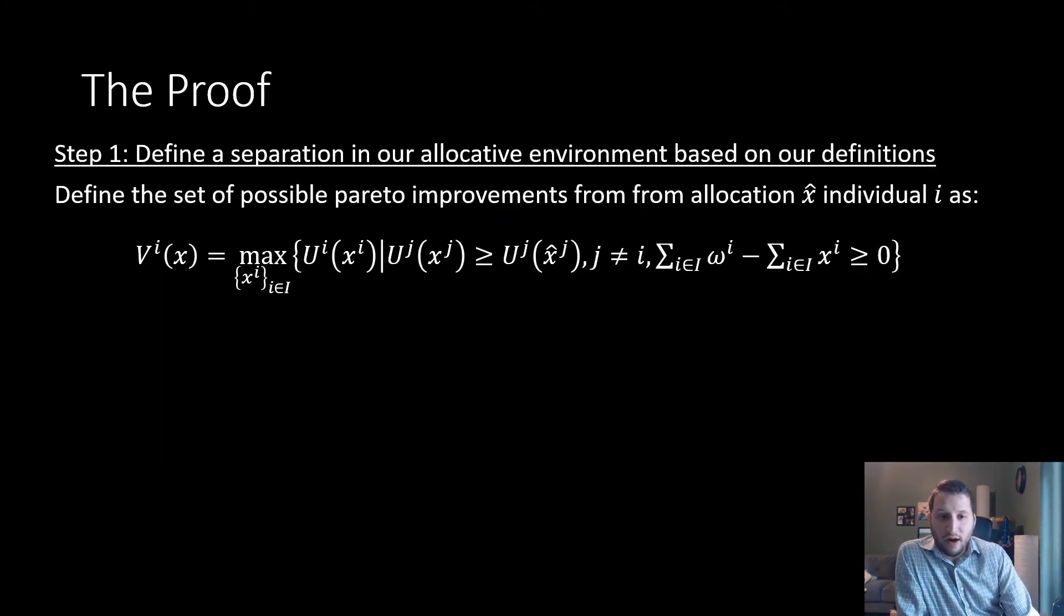So we're going to define a separation in our allocative environment based on our definitions. We define a set of possible pareto improvements from allocation x̂ for individual i as follows. Our individual is going to be maximizing his utility by picking x such that it does not negatively impact the utilities of our other agents in our economy and our resource constraint is satisfied.